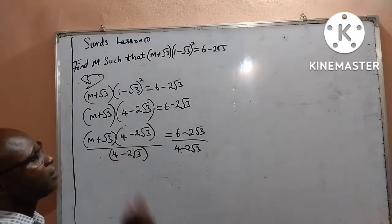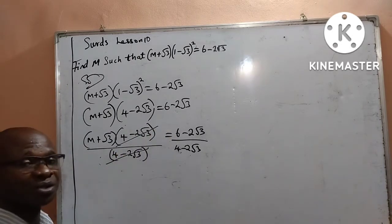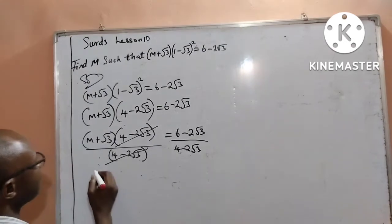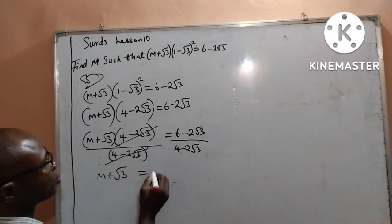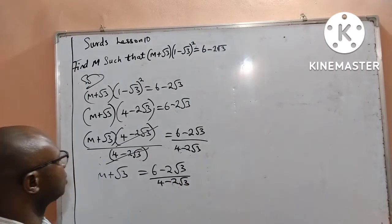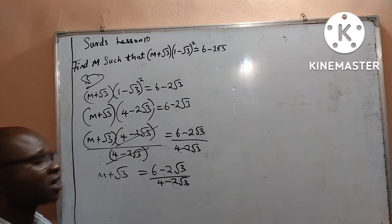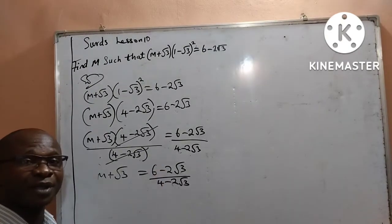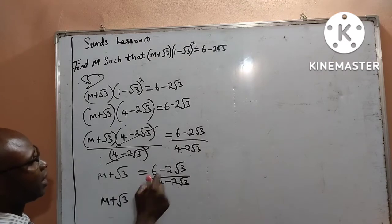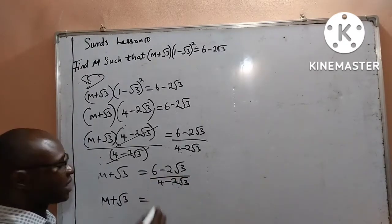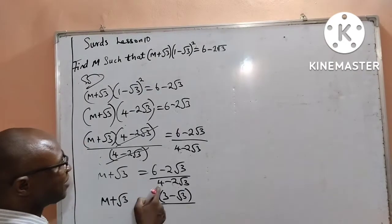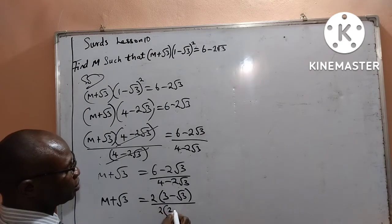I am dividing both sides by 4 minus 2 root 3. I can cancel out 4 minus 2 root 3 at the numerator and denominator on the left. What is left by the left-hand side is m plus root 3, which is now equal to 6 minus 2 root 3 all over 4 minus 2 root 3. I can factor out what is common: at the numerator, 2 is common, giving 2 into 3 minus root 3. At the denominator, 2 is also common, giving 2 into 2 minus root 3.